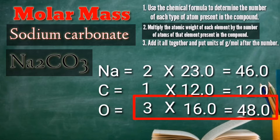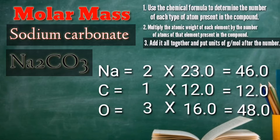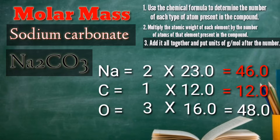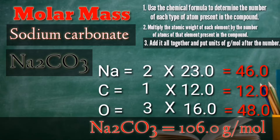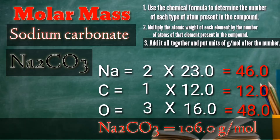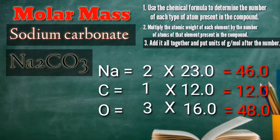After that, rule number three: add it all together and put units of grams per mole after the number. So, 46 plus 12 plus 48 equals 106 grams per mole. In other words, the molar mass of sodium carbonate is 106 grams per mole.